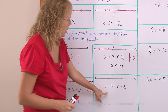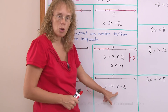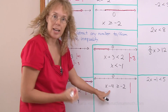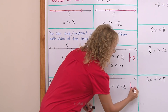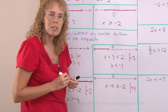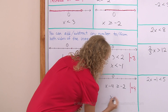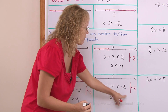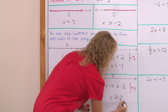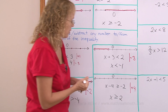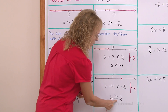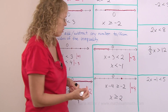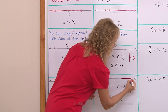Over here: x minus 4 is greater than or equal to negative 2. To isolate x, add 4 to both sides, just like with an equation. Then x is alone, the sign stays the same, and negative 2 plus 4 is 2. So x is greater than or equal to 2. Plotting: 2 is included because of the 'or equal to,' and anything greater than 2 is in the solution set.